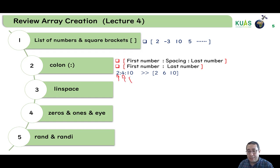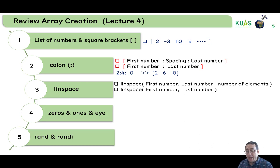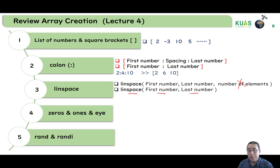The second way is using the colon notation: write the first number, then the spacing, then the last number, all separated by colons. If we write start 2, step 4, end 10, it gives 2, 6, 10. The third way is linspace: write the first number, comma, the last number, comma, and the number of elements. For example, linspace(2, 10, 3) gives 2, 6, 10.